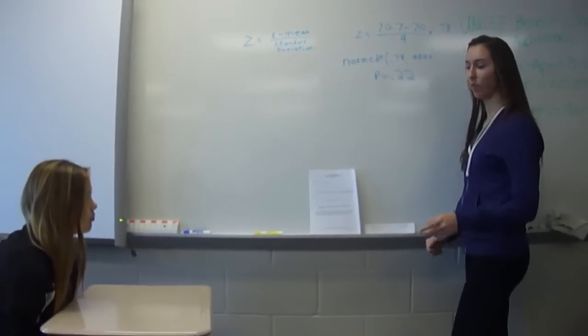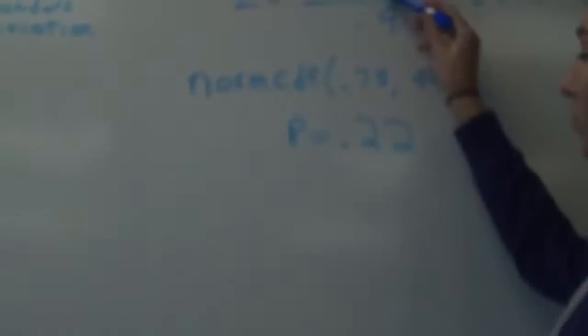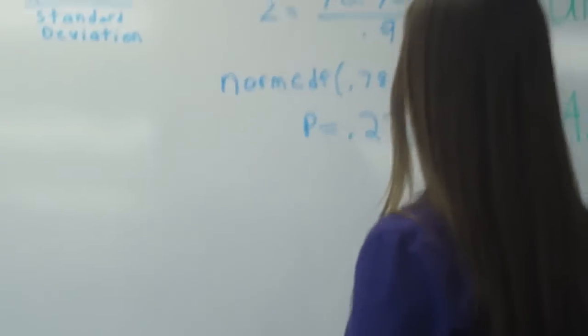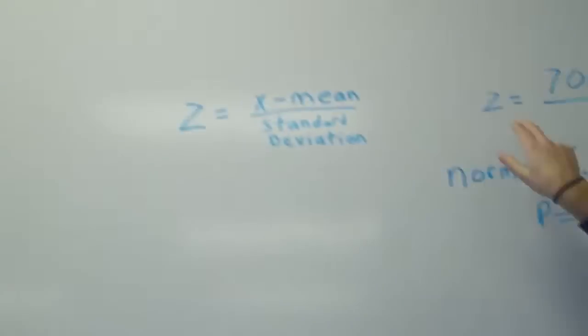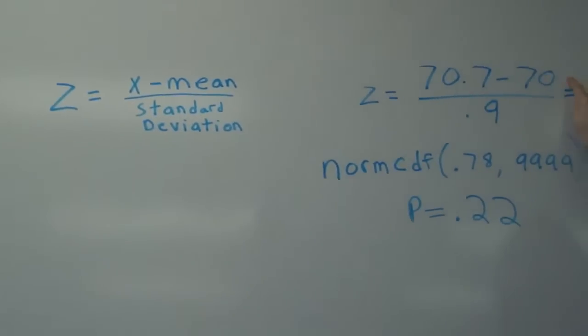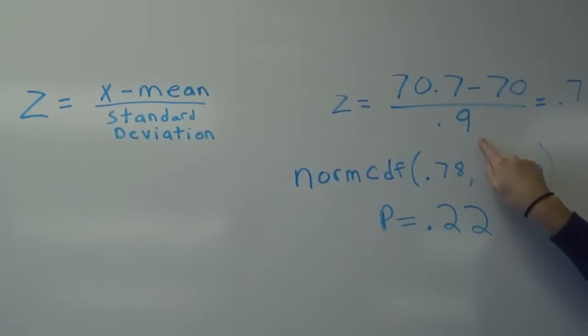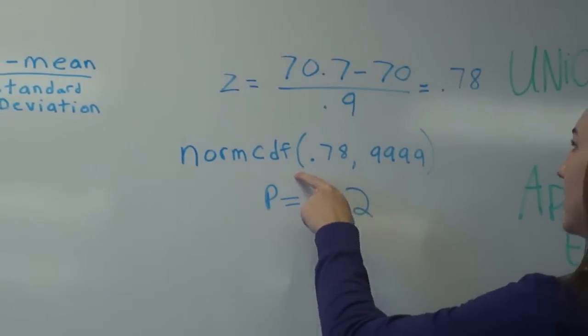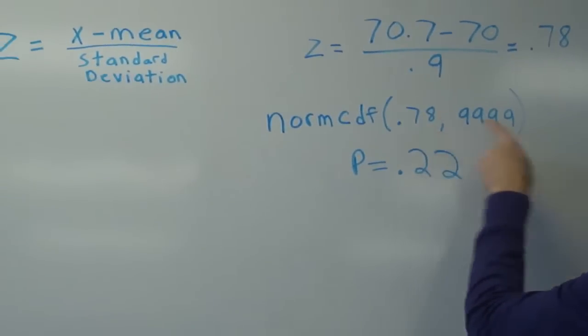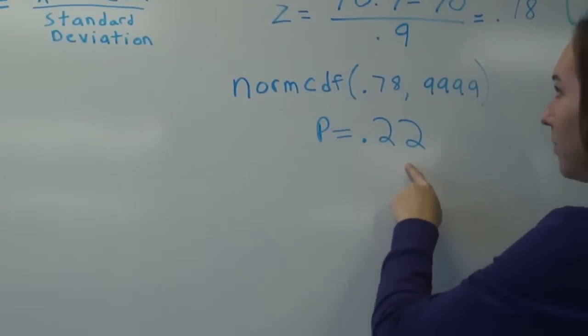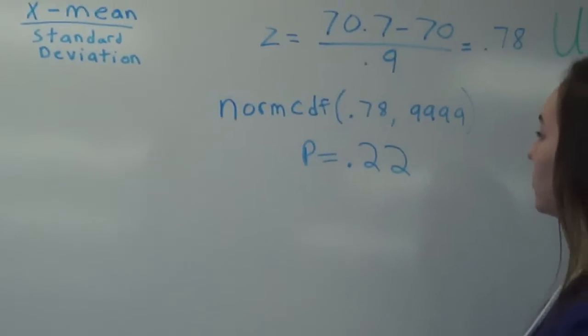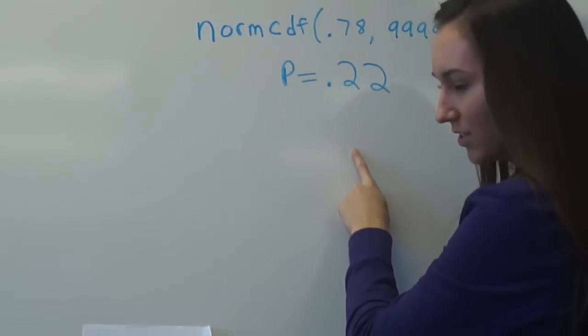I randomly selected a truck and the weight of the ore in that truck was 70.7 tons. Now, the probability of this happening, we took the z-score of this by subtracting it from the average mean and dividing by the standard deviation. And then, on the calculator, you do normal CDF of the z-score, 99999, and the probability that a weight of a randomly selected truck is 70.7 tons or greater is .22.